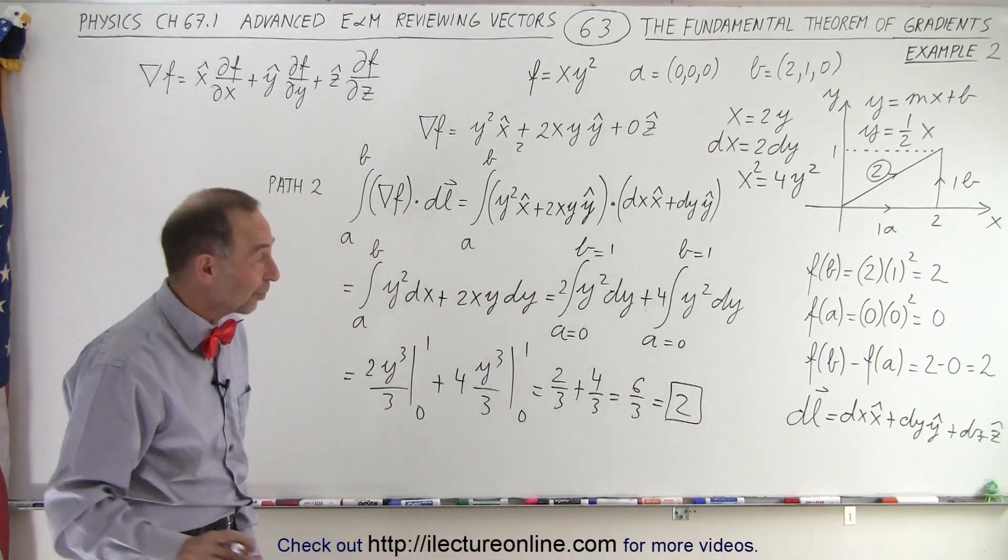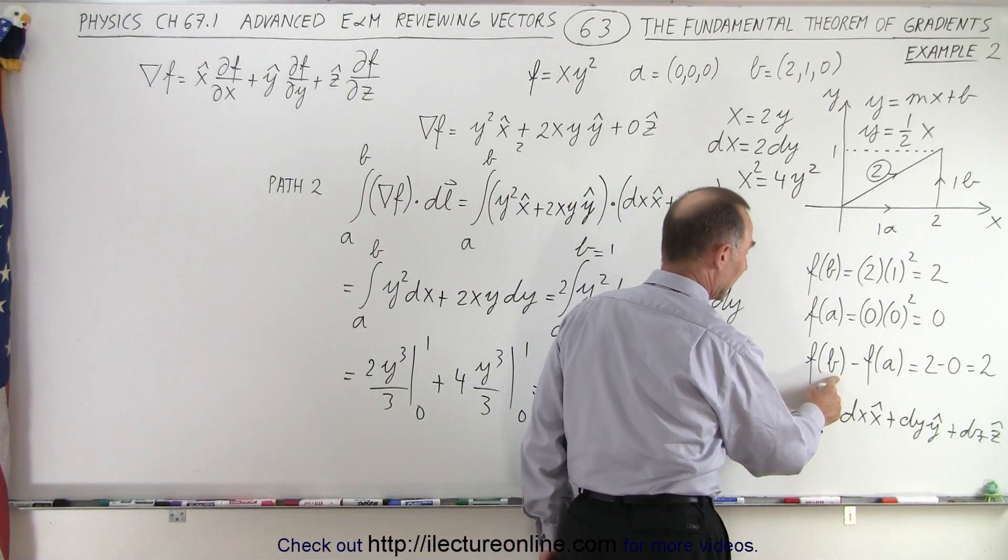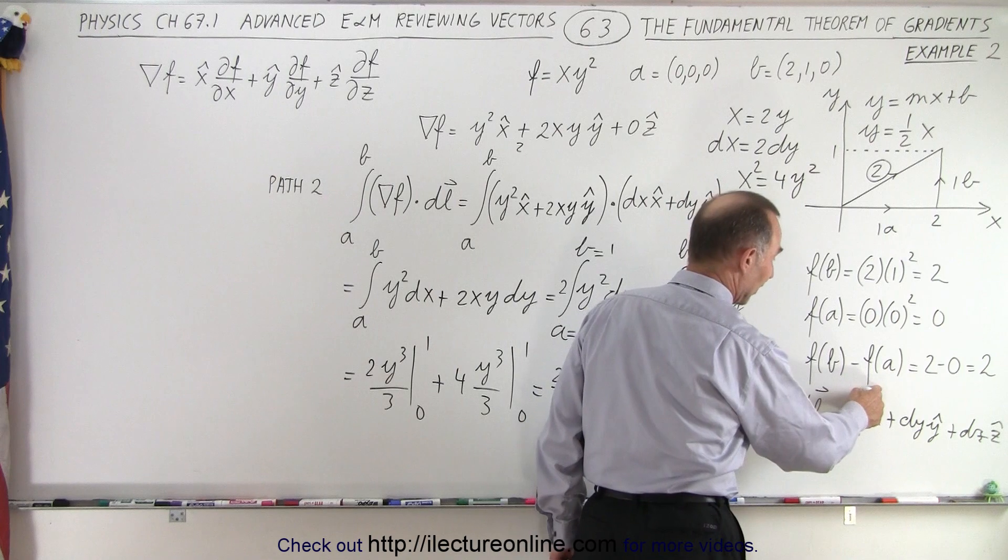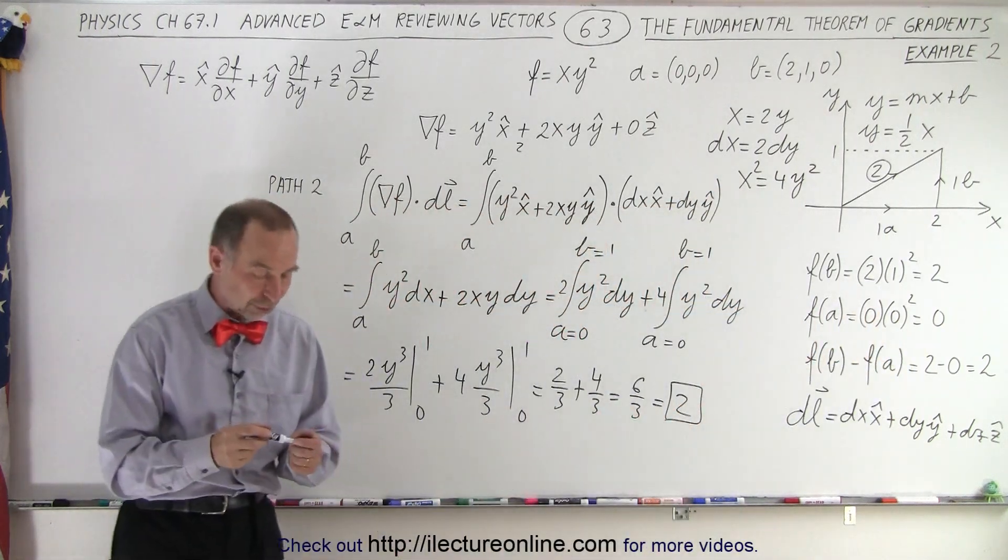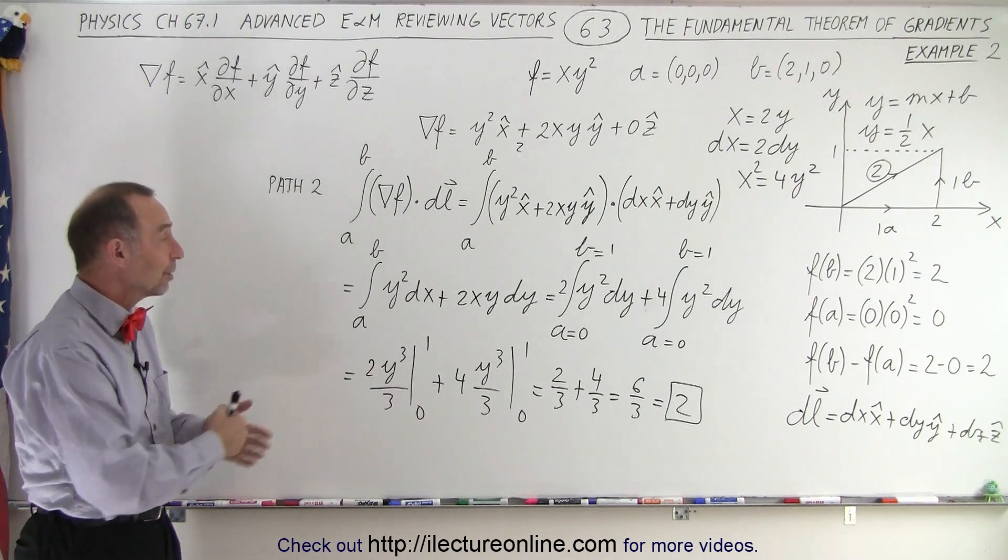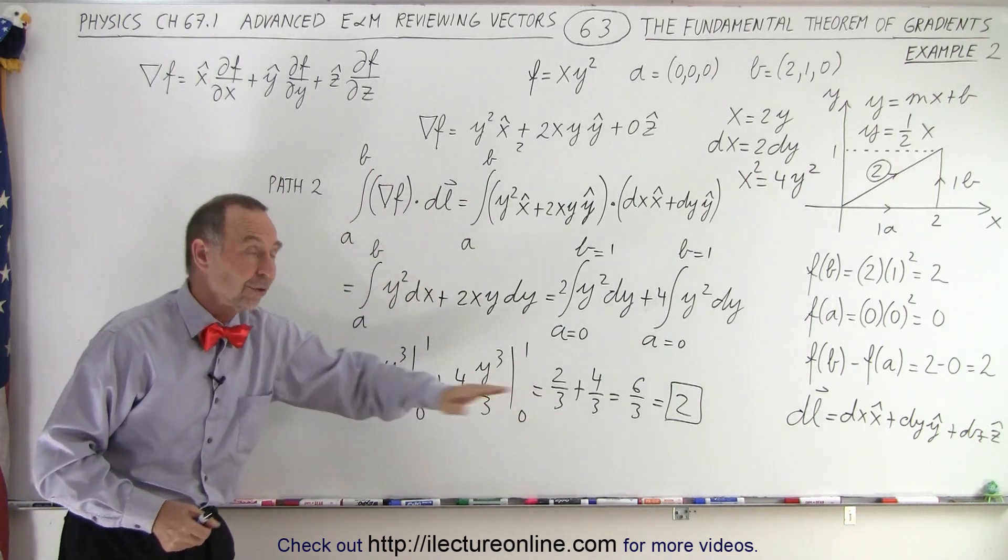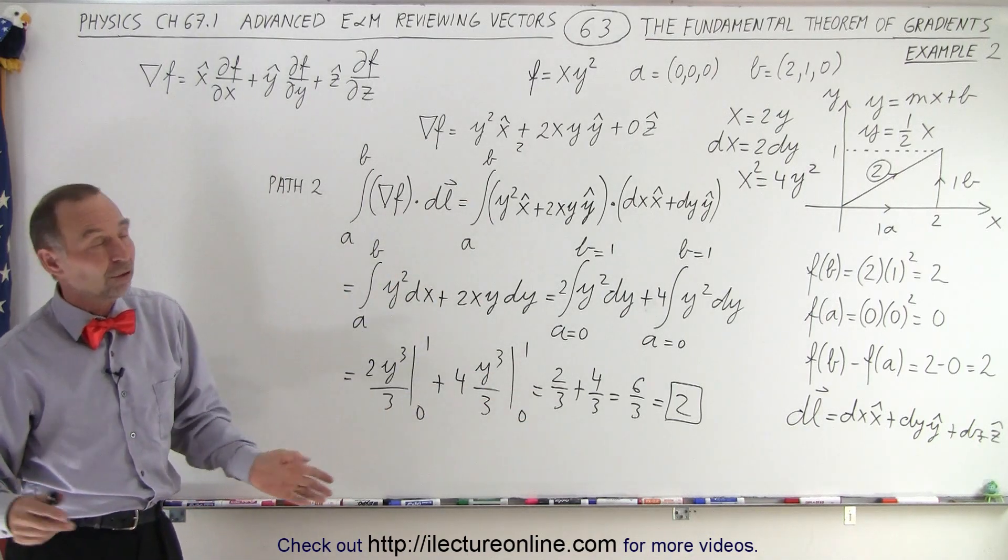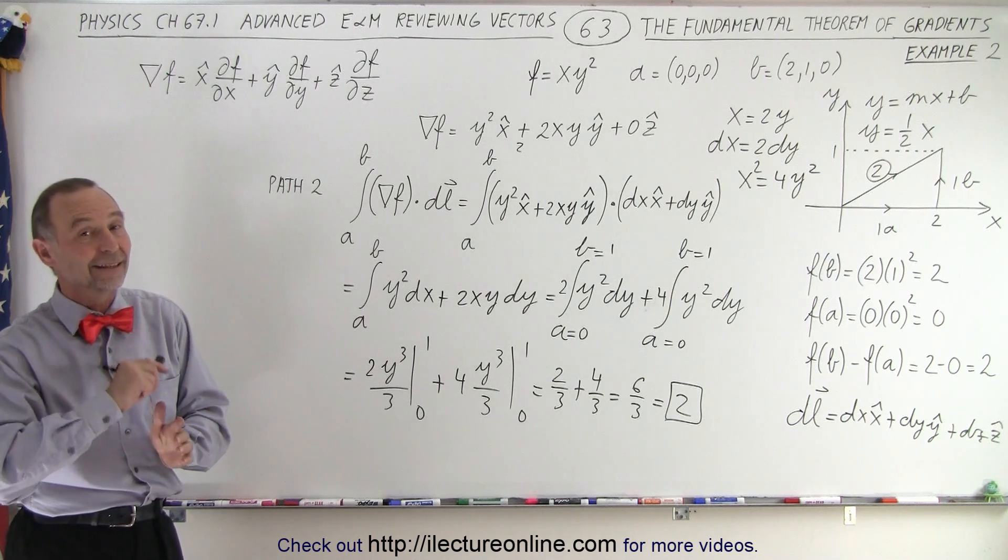And again, notice we can end up with the very same result as before. It is equal to the difference between the function evaluated at b minus the function evaluated at a. So again we showed you that the fundamental theorem of gradients does seem very practical and can be quickly used to avoid having all this work and simply get to the final answer. We can also be assured that it appears to be path independent as we claimed, and that is how it's done.